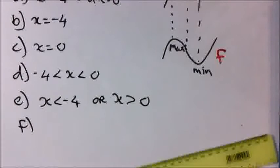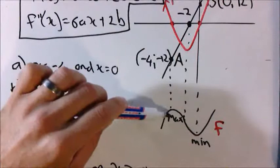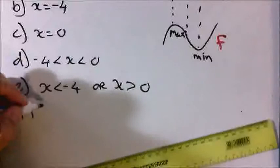Part F: the gradient of f(x) when x = -4. Looking at the graph, where x = -4 is at the turning point, so the gradient will be 0. The gradient, which is also the value of the first derivative, where x = -4, is equal to 0.